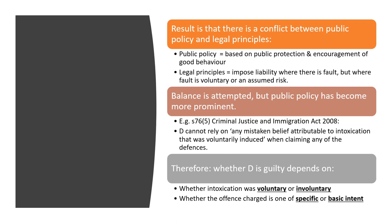Balance is attempted but public policy has become more prominent. Section 76(5) of the Criminal Justice and Immigration Act 2008 states the defendant cannot rely on any mistaken belief attributable to voluntarily induced intoxication when claiming defences under that Act. Whether the defendant is guilty depends on whether the intoxication was voluntary or involuntary and whether the offence charged is one of specific or basic intent — giving us four combinations we need to predict the outcome of.